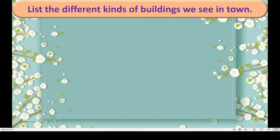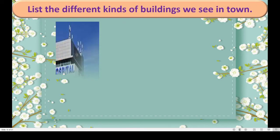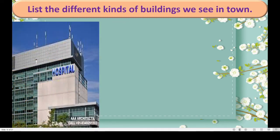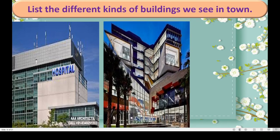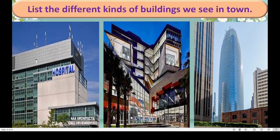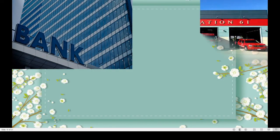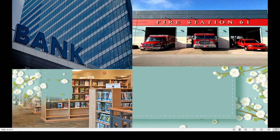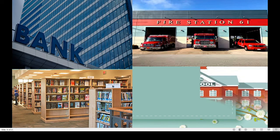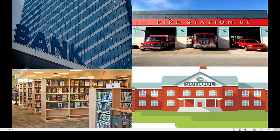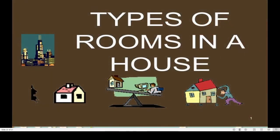Next, the different kinds of buildings we see in town. See this is a hospital. We can see different types of buildings — hospital, bank, skyscrapers you can see in our town, library, fire station, malls, schools, post office, stock exchange. You can see different types of buildings.